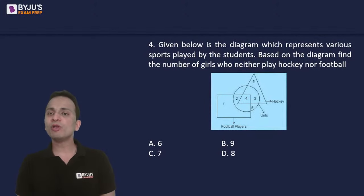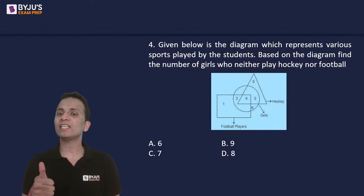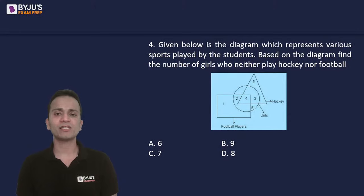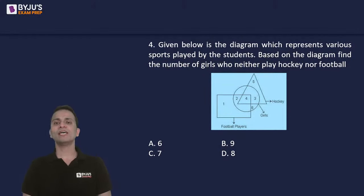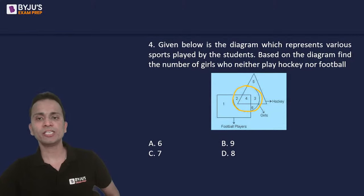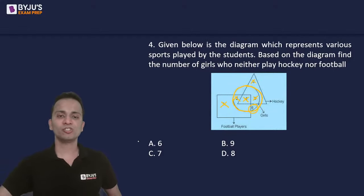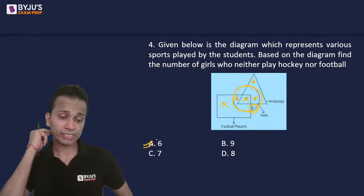Question number 4: given a diagram with a rectangle representing football players, a circle representing girls, and a triangle representing hockey players, find the number of girls who neither play hockey nor football. We need girls included in the circle but outside the triangle and outside the rectangle. The only region satisfying all conditions has 6 students. The correct answer is 6.